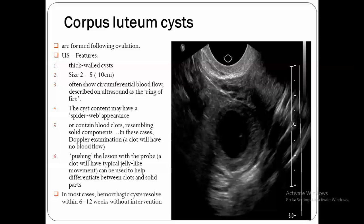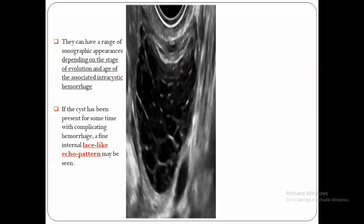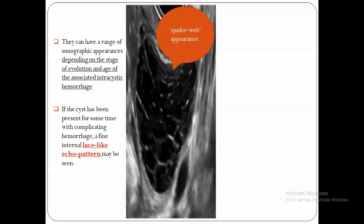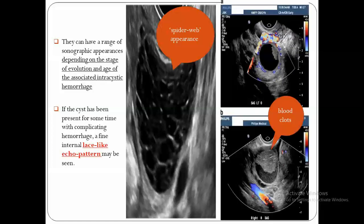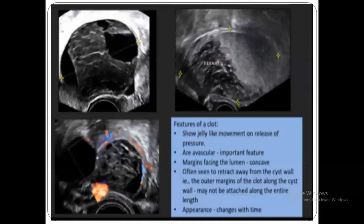To differentiate a blood clot from solid components, we use color flow Doppler, and if we push with the probe we will see jelly-like movement. In most cases, hemorrhagic cysts will resolve within 6 to 12 weeks without intervention. The ultrasound appearance of hemorrhagic or corpus luteal cysts varies according to the age of the corpus luteum and associated intracystic hemorrhage — either spider web appearances, also called lace-like echo pattern, or a clot with no internal color flow Doppler and jelly-like movement on probe pressure. The Doppler shows a typical ring of fire.